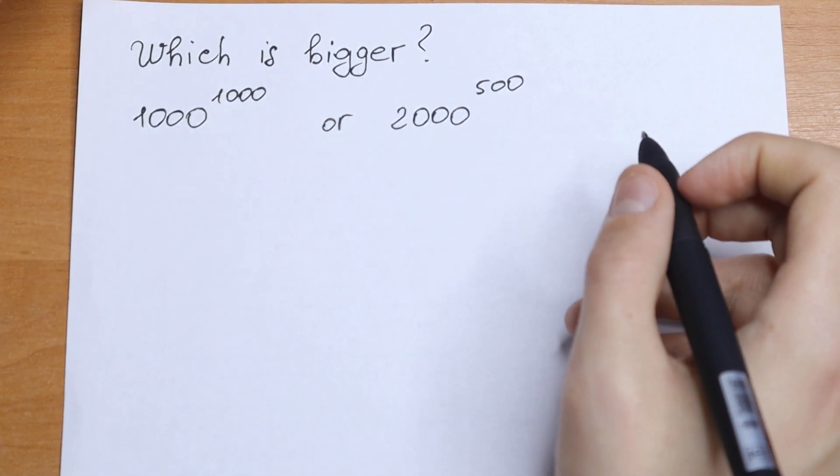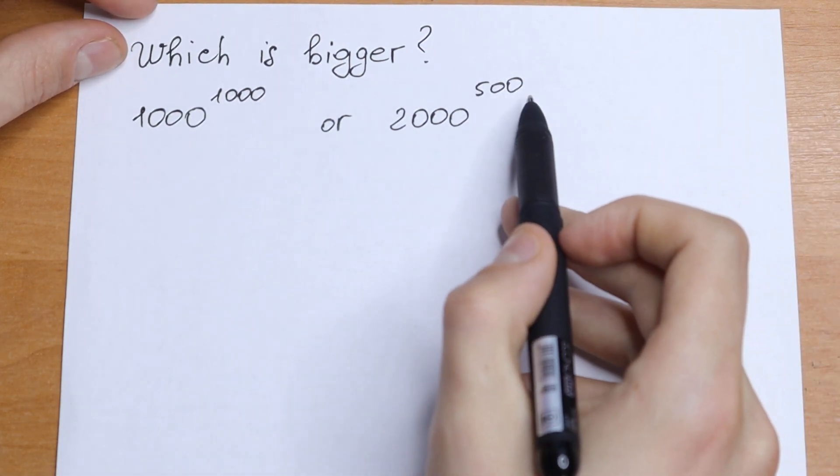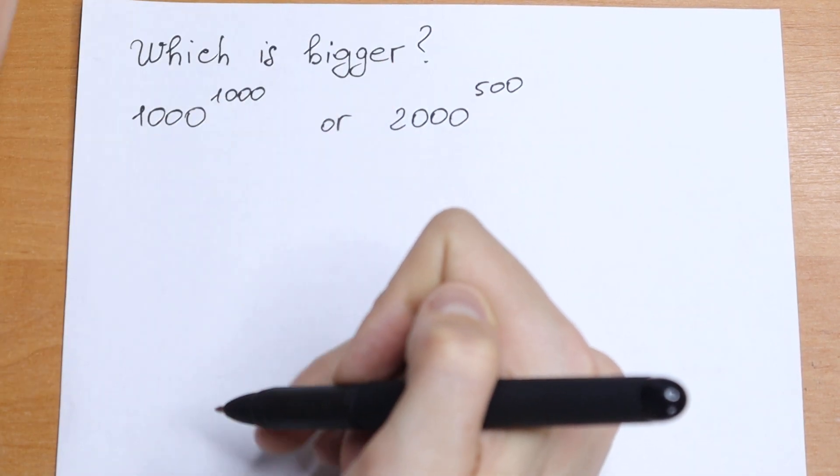I want to suggest a really good trick how to solve it. Take a look. We have 1000 and we have 500, so we can take the 500th root from both of the sides.